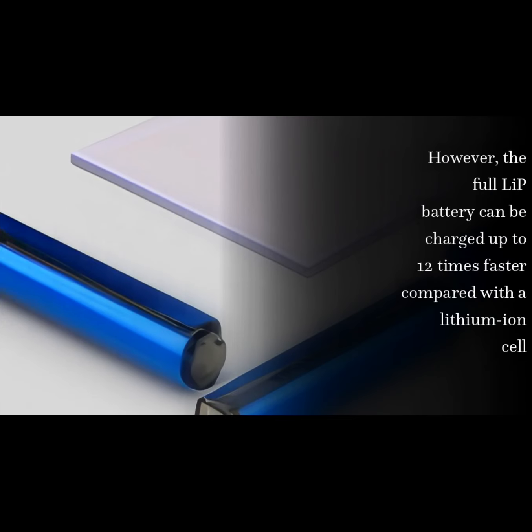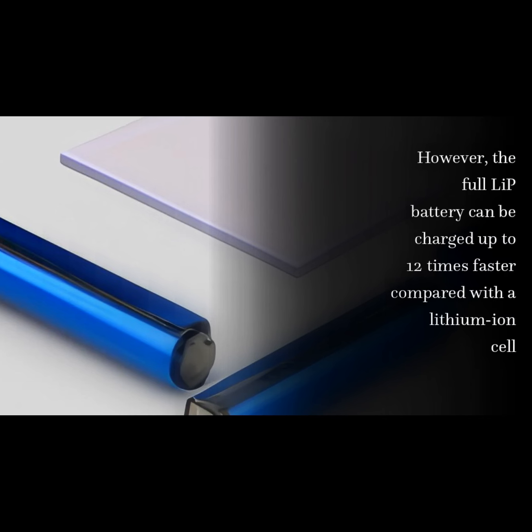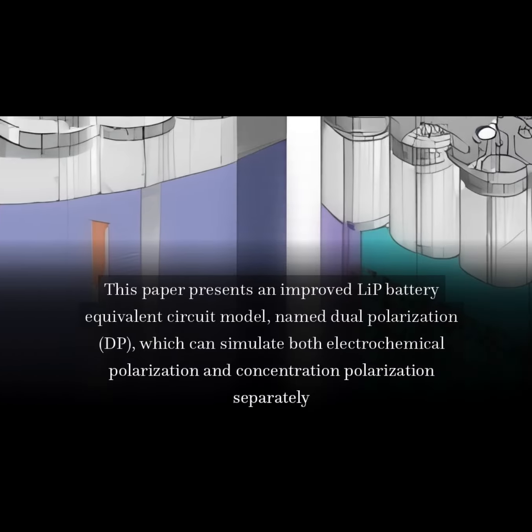However, the full LIP battery can be charged up to 12 times faster compared with a lithium-ion cell. This paper presents an improved LIP battery equivalent circuit model named Dual Polarization, which can simulate both electrochemical polarization and concentration polarization separately.